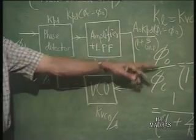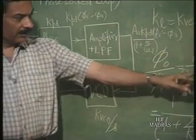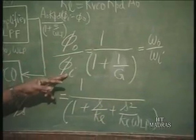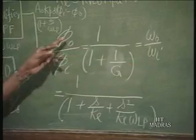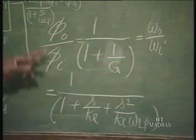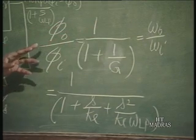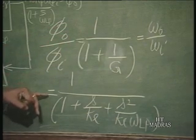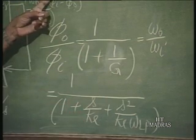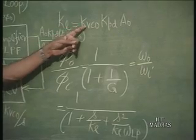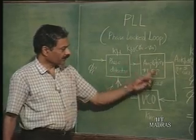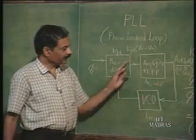From that, we get phi_naught by phi_i equals 1 over (1 plus 1/G), where G is the loop gain K. And phi_naught by phi_i is the same as omega_naught by omega_i, so if it is a phase follower it is also a frequency follower, because of the linear relationship between phi_naught and omega_naught. This equals 1 over (1 plus S/K_L), where K_L is the DC loop gain equal to Kv_CO times Kpd times A_naught — the product of sensitivity factors within the loop.